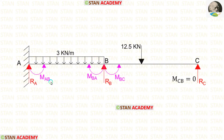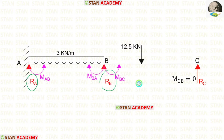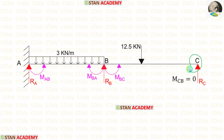In this beam, we have to find three moments: MAB, MBA, and MBC. Also, we have to find three reactions: RA, RB, and RC. In point C, there will be no moment because it is a simply supported end, so MCB will be 0.